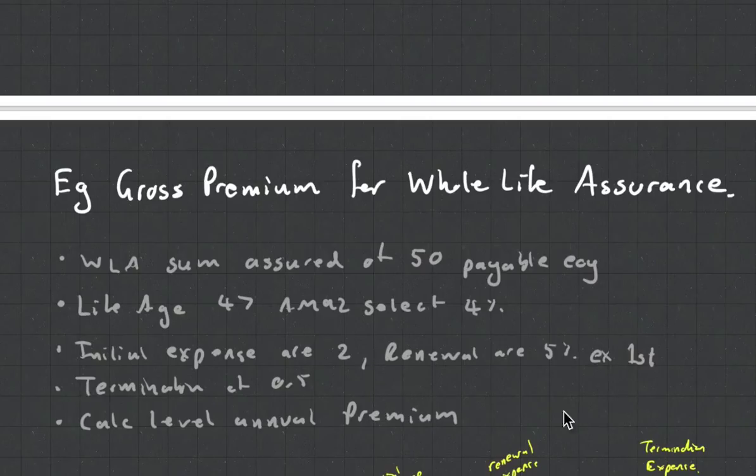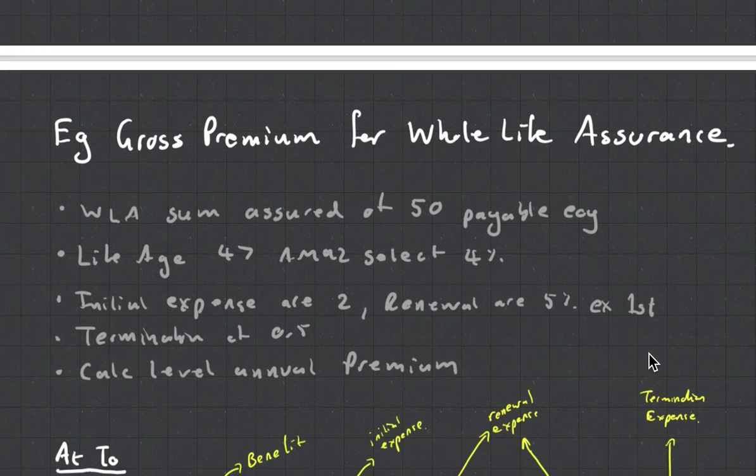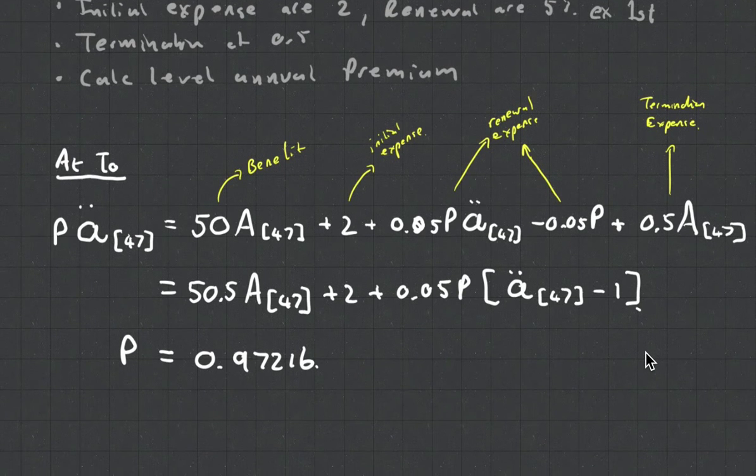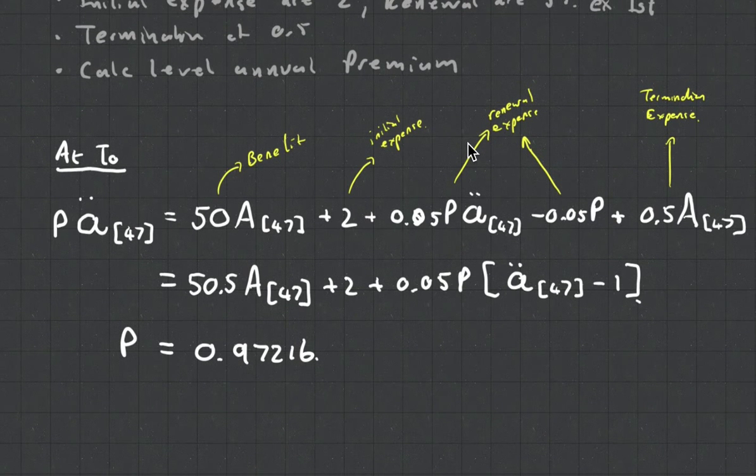Renewal is a little bit tricky because it's excluding the first premium. When we come down and look here, you can see that what I've done is I've included renewal expense for the first year and then I've had to subtract it again. The reason I've done that is just so that my expected values are all at the same ages.